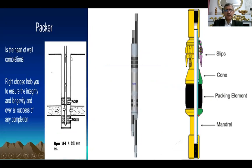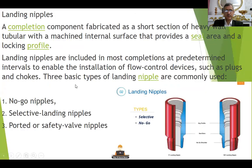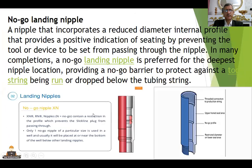This casing should be kept isolated during the well life cycle. We have this packer with slips and packing elements — the slips fix it and the packing element isolates it — isolating below the packer and above the packer. Landing nipples: here we can run flow control devices. We have three types: no-go nipples, selective landing nipple, and ported or safety valve nipple.